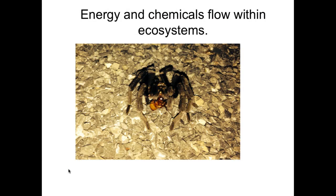In the previous section we looked at how an ecosystem is influenced by its latitude, as well as by precipitation and topography, and that ecosystems fall into different biomes. What we're going to be looking at in this section is how energy flows throughout the ecosystem.